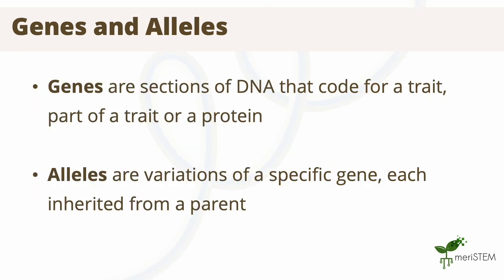These chromosomes contain genes, which are sections of DNA that code for something important such as a trait, part of a trait, or even a protein. The expression of traits is complex and is controlled by the interaction of multiple genes. One particular gene can have multiple variations, and these different variations are known as alleles.